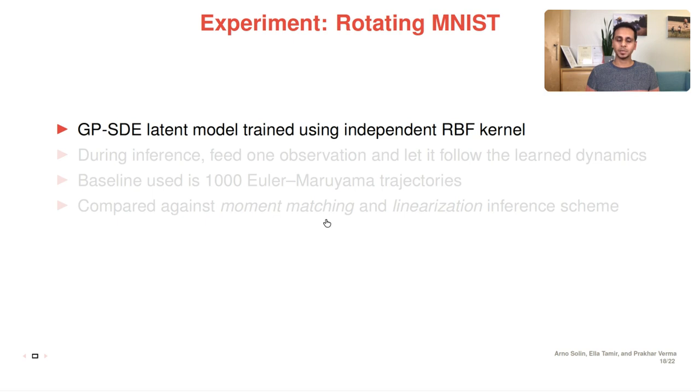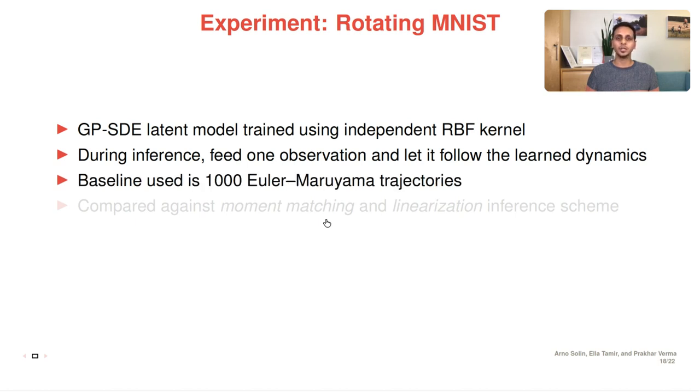For this experiment, the GP-based latent model is trained using independent RBF kernels over different latent dimensions. During inference, we feed one observation and let it follow the learned dynamics. As a baseline, we used 1000 Euler-Maruyama trajectories and we compare it against moment matching and linearization inference schemes as discussed earlier in the presentation.